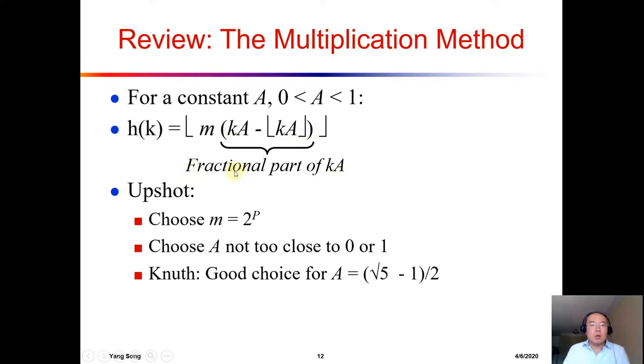So this fractional part of K A is guaranteed to be between 0 and 1. We multiply by M, and then we take the integer part again. So this value is again guaranteed to be between 0 and M minus 1, which are the allowed keys in the hash table.